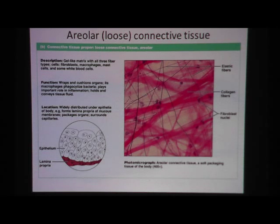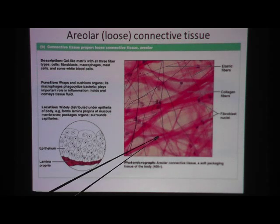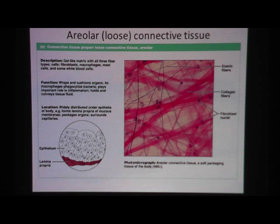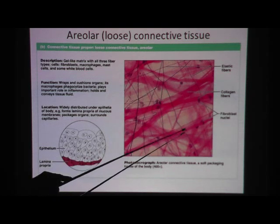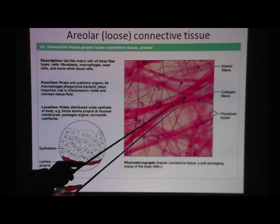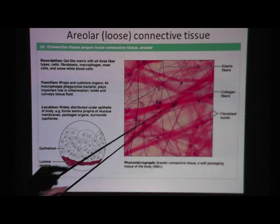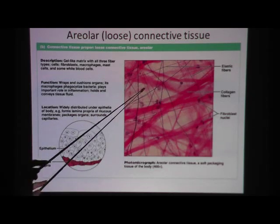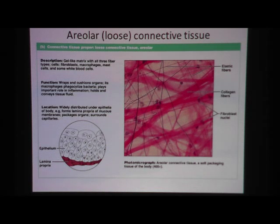Let's talk about areolar loose connective tissue. The main cells you need to know here are fibroblasts. You can see the cell because of its nucleus — when you see the nucleus, you know that's a cell. The most common cells in areolar tissue are fibroblasts. Notice how the cells are scattered with lots of space in between. In that space you have fibers: the thick fibers are collagen fibers, and the thin, skinny fibers are elastic fibers.